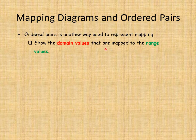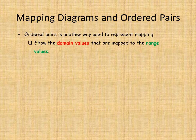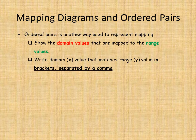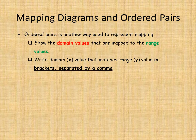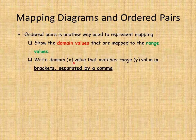We're just matching the values in the domain with the values in the range. To do this, we look in the domain and find the x value that matches up with the y value. We follow our arrows — we look at each element in the domain and follow the arrow to see which element in the range it matches up to. Then we write down those two numbers in brackets, separated by a comma.